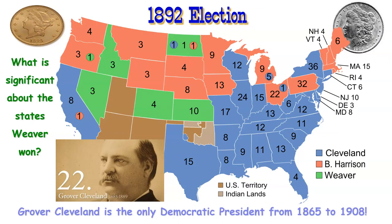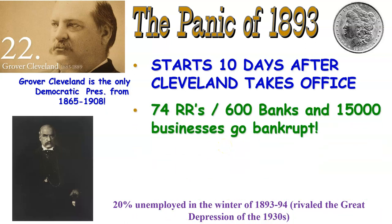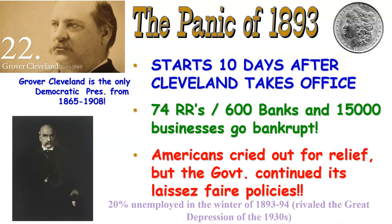The 1892 election sees some success for the populist party — electoral votes won — but Grover Cleveland still wins, remaining the only Democratic president from 1865 to 1908. As soon as he is sworn into his second term in office, there is the Panic of 1893 — only ten days later. Railroads, banks, and businesses go bankrupt, and unemployment reaches 20%, rivaling what would later be seen in the Great Depression of the 1930s.